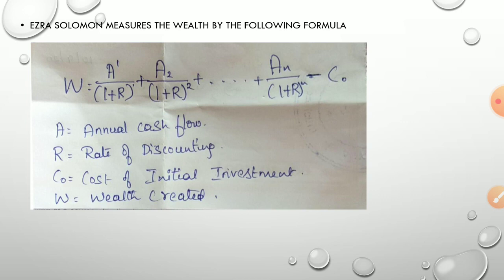If W (wealth) equals zero, that means the returns each year, after applying the discounting factor to account for risk and uncertainty, when summed across all years and reduced by the initial cost, result in zero — meaning you can accept that investment. If the difference is positive, definitely you can take the investment because you are going to earn profit. If it is negative, the project or investment should be rejected. That is what wealth maximization says.